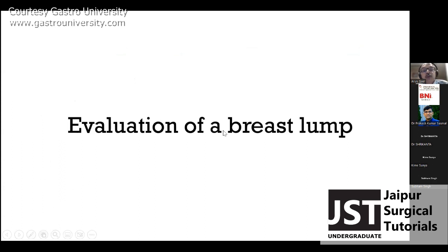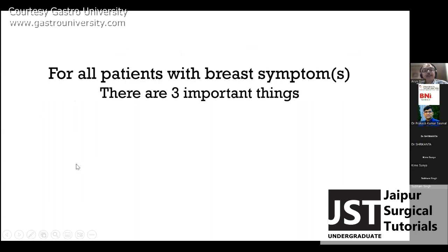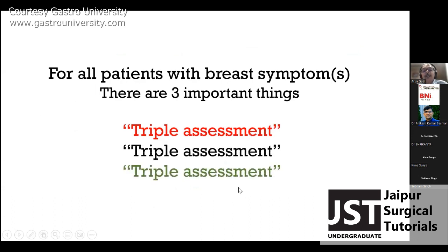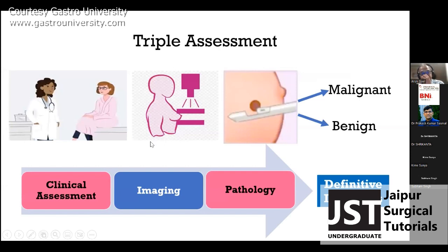When a patient with a breast lump presents in the OPD, the core approach is called triple assessment — clinical assessment, imaging, and pathological assessment — leading to a definitive diagnosis. The sequence is clinical assessment first, followed by imaging, then pathological assessment as indicated. Clinical assessment includes a detailed history and thorough examination.